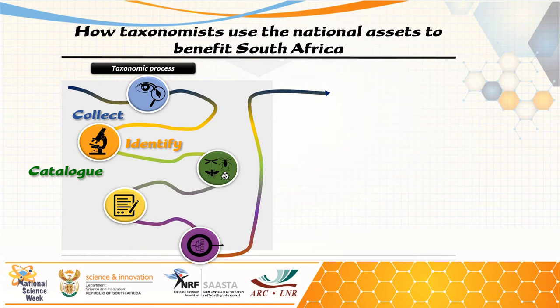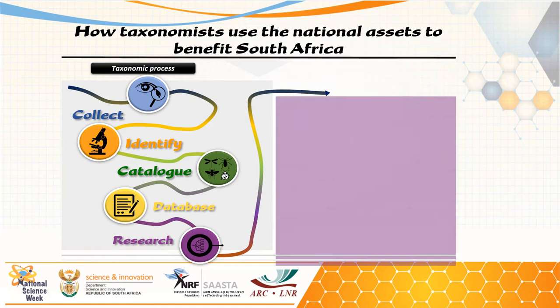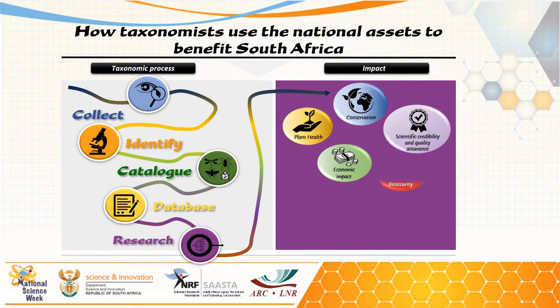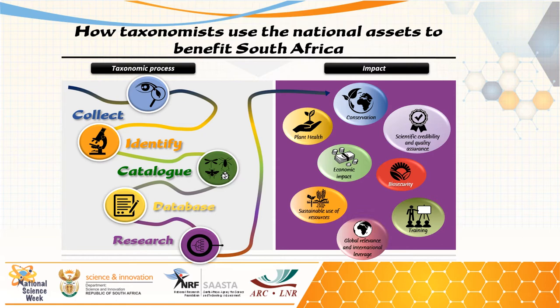Now that we understand what a national asset is, it is important to understand how it is used. The natural science collections are used by taxonomists. A taxonomist is a biologist that groups organisms into categories and gives species a name. The taxonomic process starts off with the collecting of specimens. The specimens are then examined and identified, and the data relating to the specimen is catalogued and databased. This data includes where it was collected, by who, and on what date. Through these steps, research is being done to give the specimen a name and, if it is new to science, to describe it.